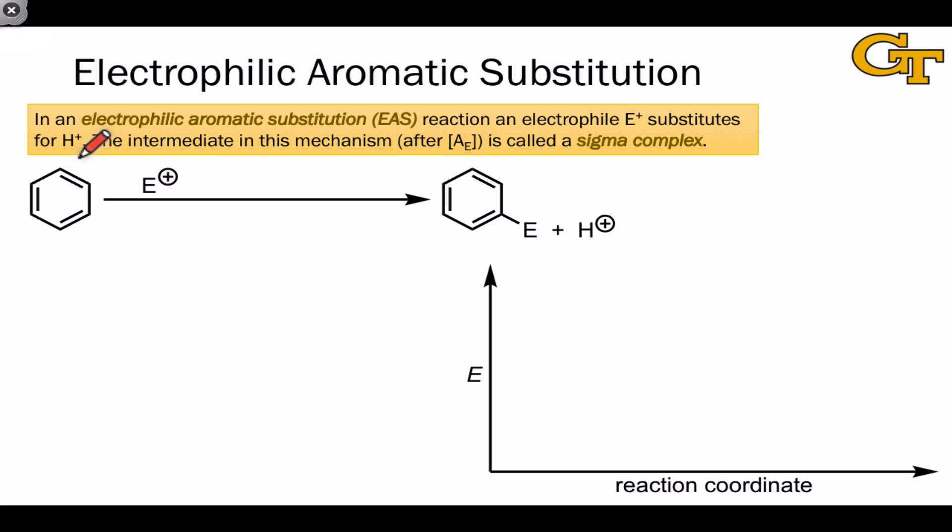The mechanisms of electrophilic aromatic substitution reactions typically begin with generation of the active electrophile, but this can happen through a number of different mechanisms that we'll talk about in detail in future videos. Here, I want to focus on the steps of electrophilic aromatic substitution that are truly general, that follow generation of the active electrophile.